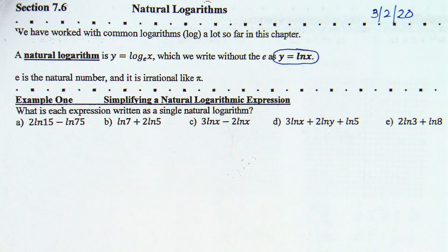Okay, so, back in 7.4. We had four properties that allowed us to take something like this and write it as a single log. So, back there we had power property, product property, quotient property, and identity property.